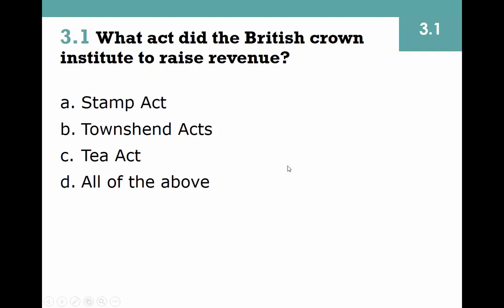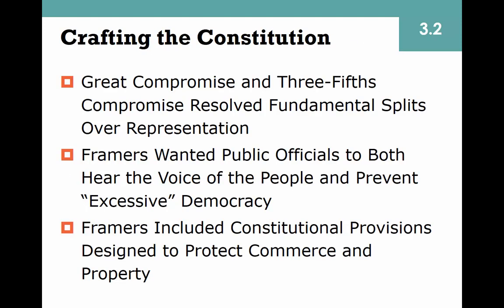Delegates met with a sense of urgency. The national government appeared unable to handle international disputes, establish civility between states, or handle domestic insurrections like Shays' Rebellion. The delegates quickly decided there was no point in revising the Articles — they wanted to establish a new set of ground rules for American government. What acts did the British Crown institute to raise revenue? The Stamp Act, Townshend Acts, and the Tea Act — the answer is all of the above.